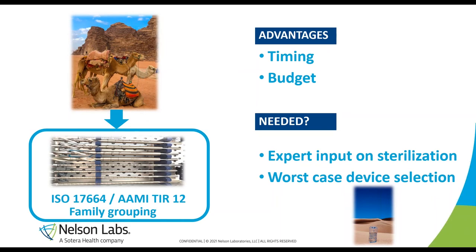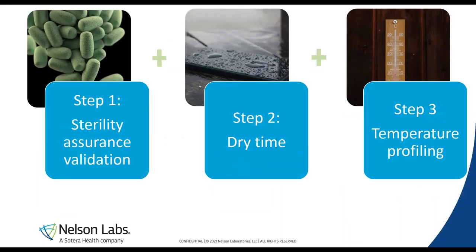The worst-case device selection is very important — that's where you can save time and money. Once you have done that, you can proceed to the validation of your process, which consists of three individual steps: Step 1 — sterility assurance validation; Step 2 — dry time; and Step 3 — temperature profiling.